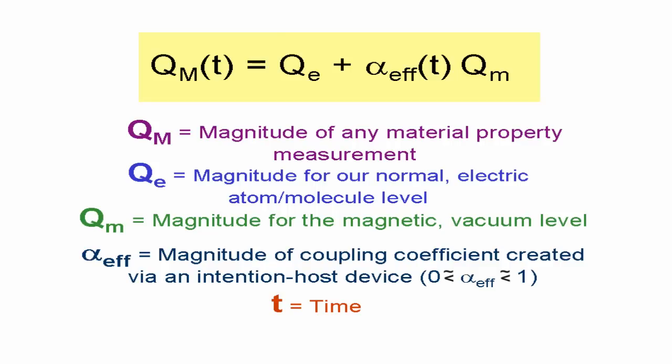If alpha effective is zero, then of course we just reproduce our conventional reality and all of the physics of our conventional reality.